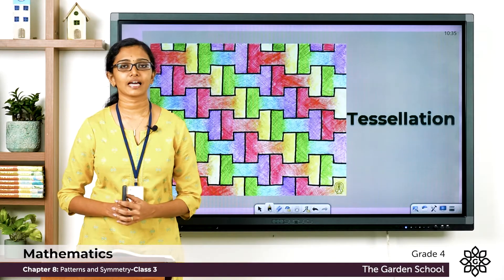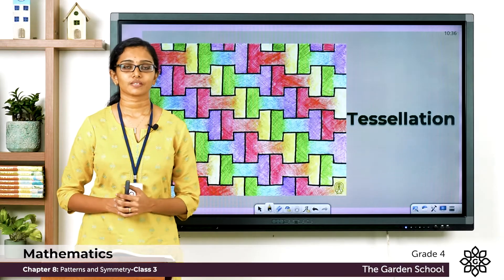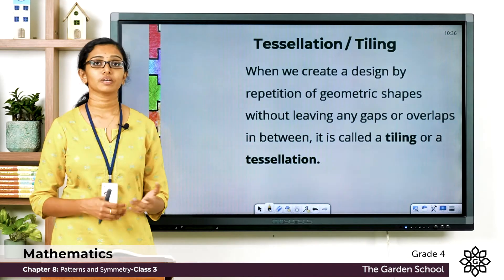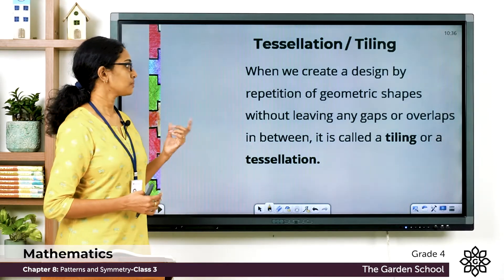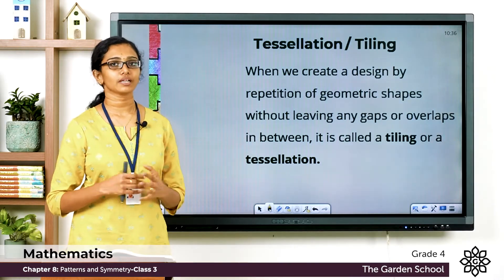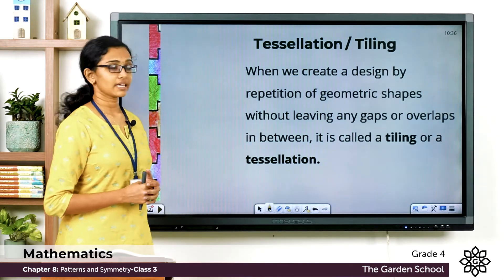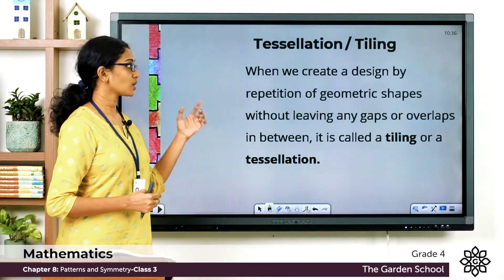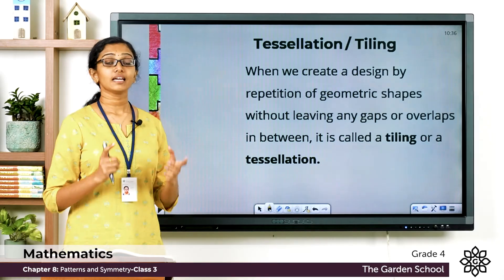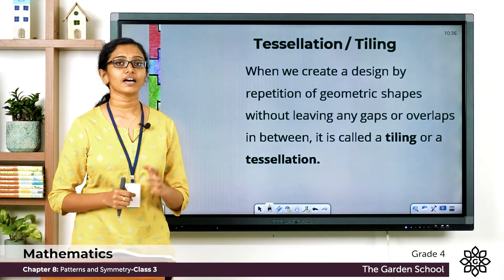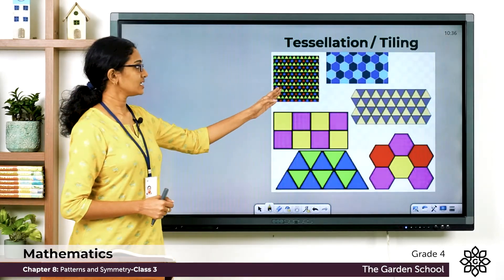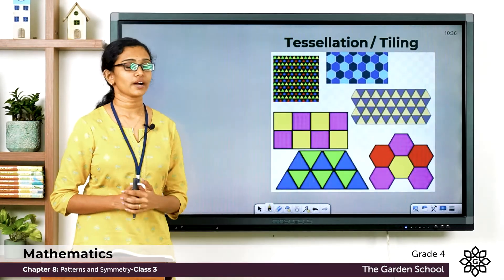What do you mean by a tessellation? A tessellation is when we create a design by repetition of geometric shapes without leaving any gaps or overlaps in between. When we create a design by repetition of geometric shapes without leaving any gaps or overlaps, it's called a tiling or a tessellation. You can see a few examples of tessellations here.